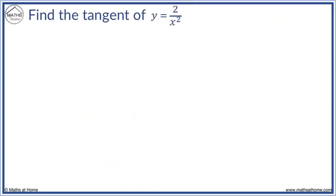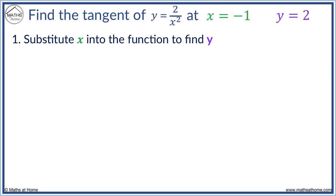Find the tangent of y equals 2 over x squared at x equals minus 1. Step 1 is needed as we have x equals minus 1 but do not know y. We sub x equals minus 1 into y equals 2 over x squared to get y equals 2.